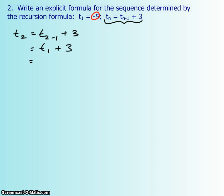That means t₁, which we have. So that's that negative 5 plus 3. So that's our second term, and our third term.